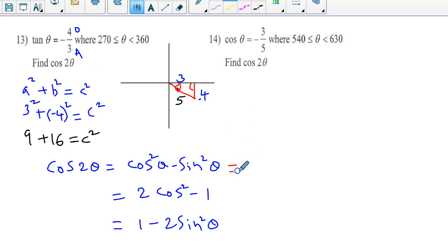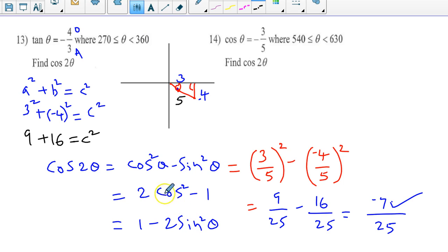Cosine is adjacent over hypotenuse, so 3 over 5 squared, minus sine is opposite over hypotenuse, negative 4 over 5 squared. 3 squared is 9, 9 divide 25 minus 16 divide 25. Both denominators are the same, so 25, and 9 minus 16 is negative 7. You can verify and see that it is right even if you substitute it in the other formulas.